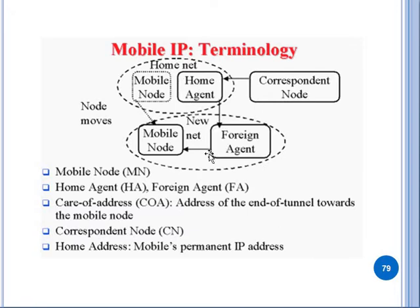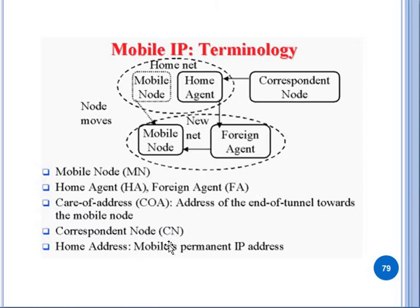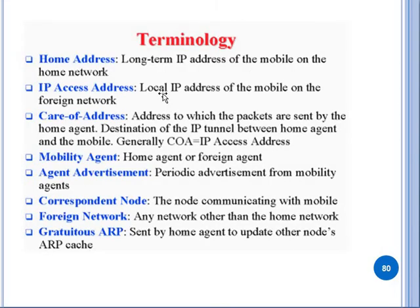In Mobile IP terminology: the home network contains the home agent; the corresponding node is the node that communicates with the mobile node; the foreign agent serves the mobile node when it is away; and the care-of address is a temporary address. The mobile node's permanent IP address is called its home address.